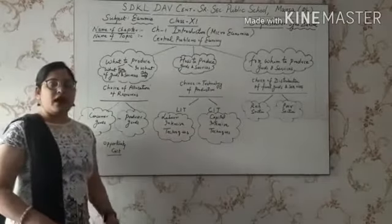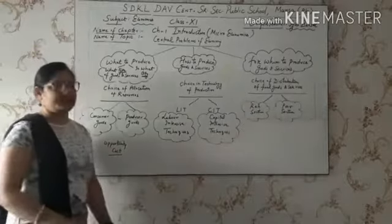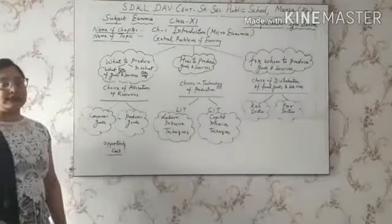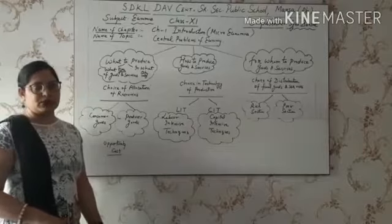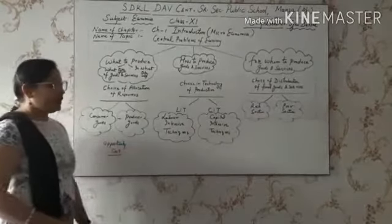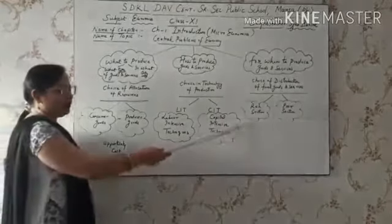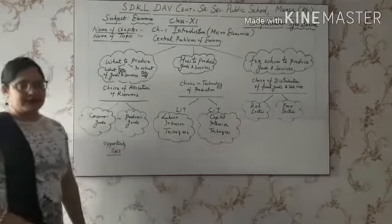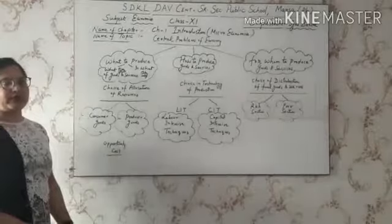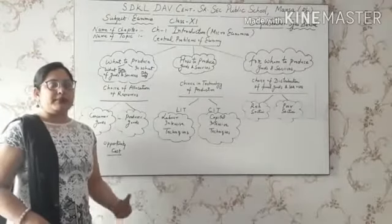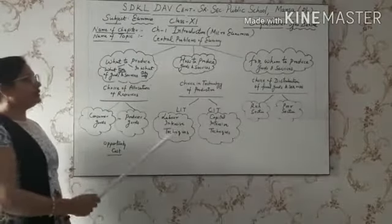The third problem is for whom to produce — meaning how and to whom the final goods and services should be distributed, whether to the rich section or the poor section. There should be balance in distribution. If only the rich section consumes more goods, profits can be maximized since the rich can afford costly goods. But if the poor section is also provided essential goods like elementary education and basic health facilities at low cost, there will be social welfare.